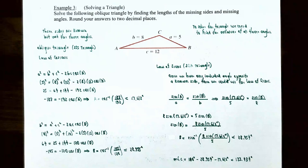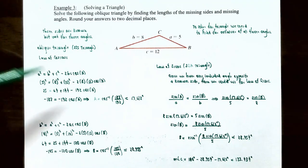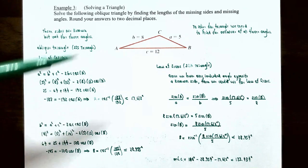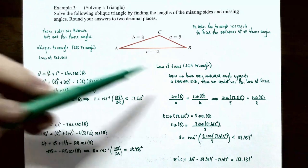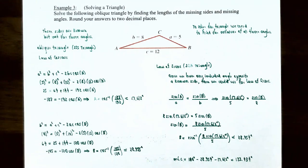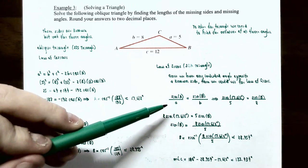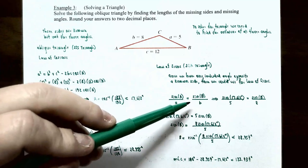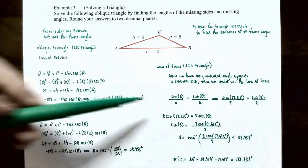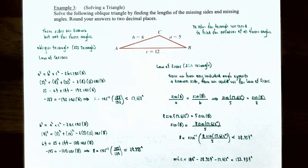That's one way to solve the oblique triangle — using the law of cosines three times to find each angle. However, there's a shortcut. After finding angle A, you can use the law of sines since you now have an angle opposite a known side. Using the law of sines: sin(A)/a = sin(B)/b.